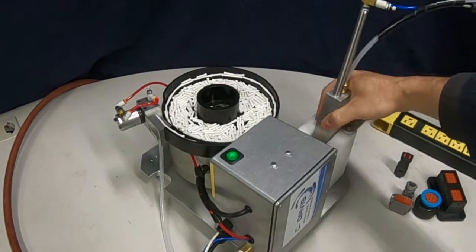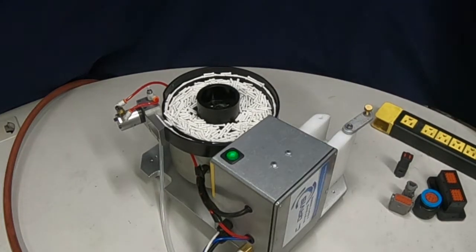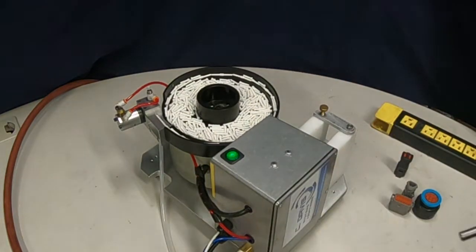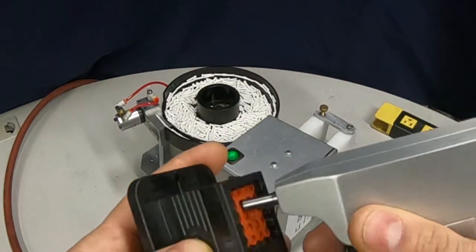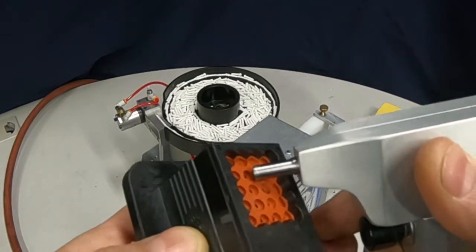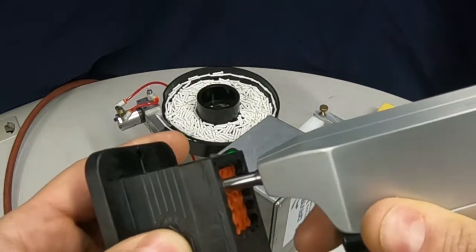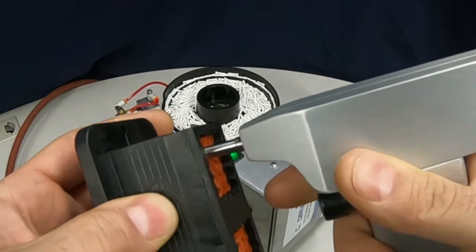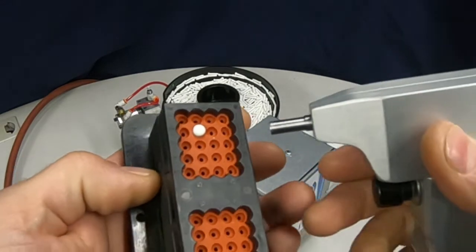But with that done the system is ready to use and inserting a seal plug is really as simple as aligning the tip with one of the cavities, depressing the tip safety, pulling the trigger and you have an insertion. It is that simple.